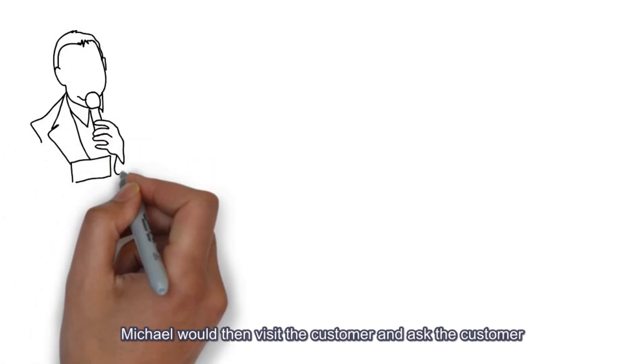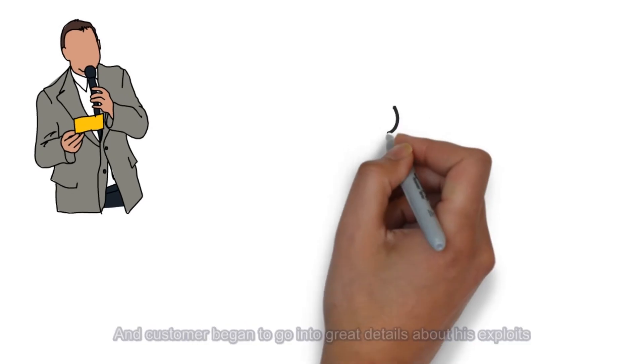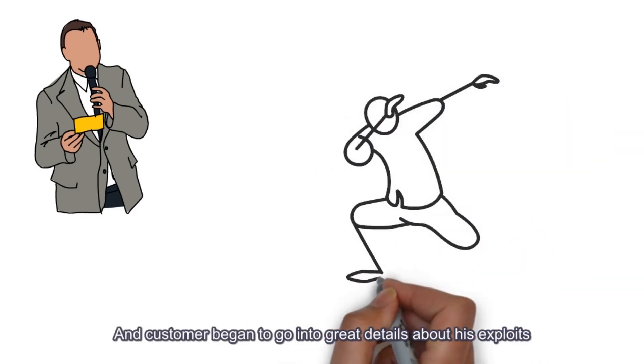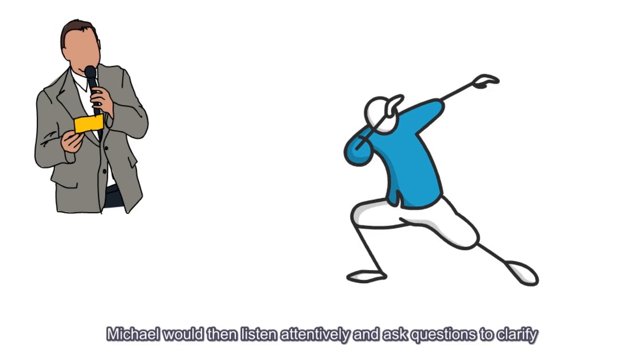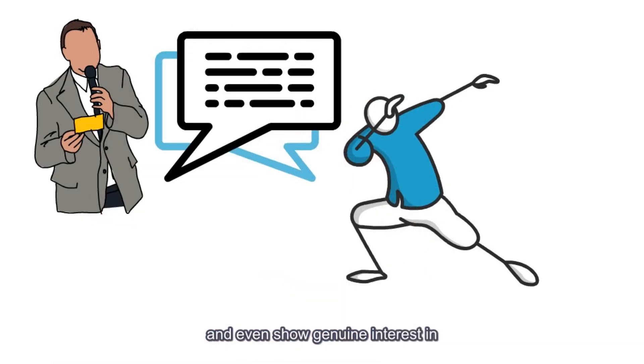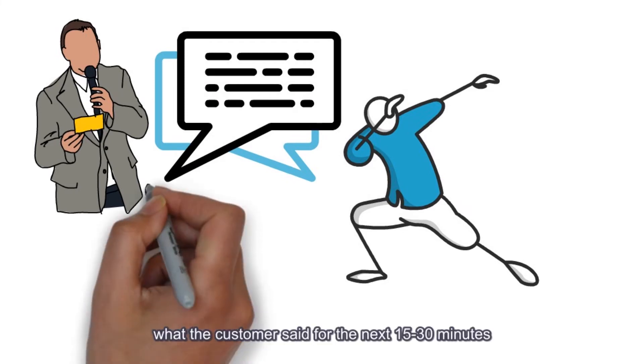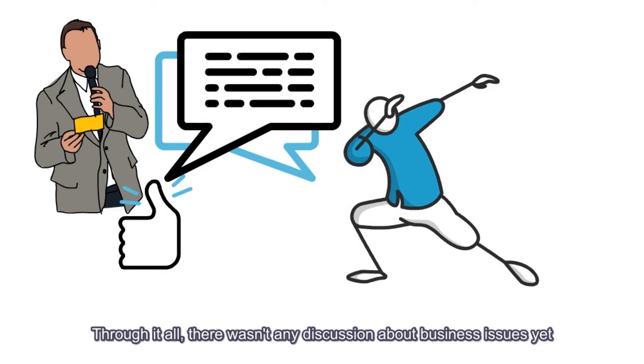Michael would then visit the customer and ask the customer about a recent visit the customer made at the nightclub. And the customer began to go into great detail about his exploits. Michael would then listen attentively and ask questions to clarify and even show genuine interest in what the customer said for the next 15 to 30 minutes. Through it all, there wasn't any discussion about business issues yet.